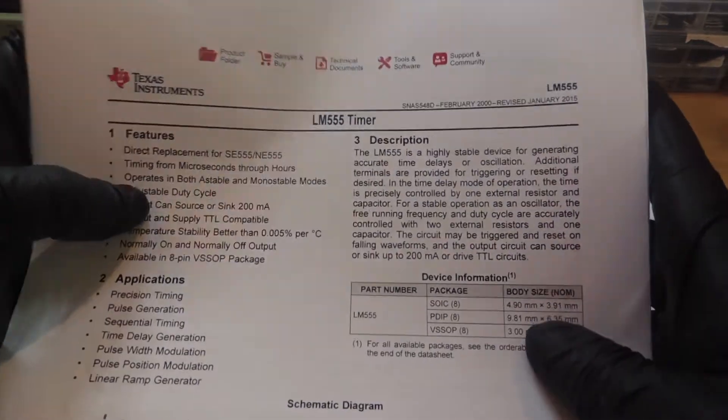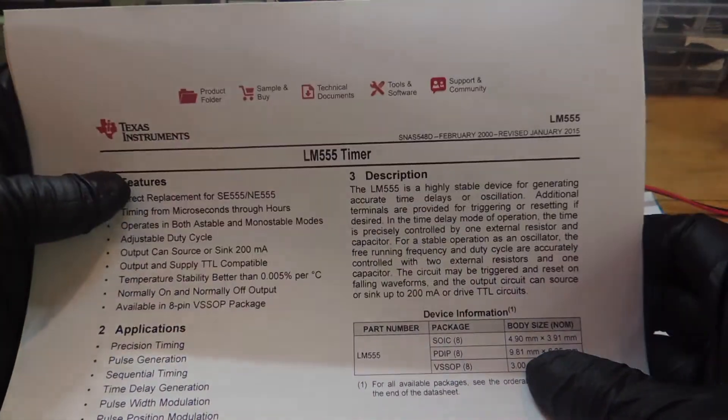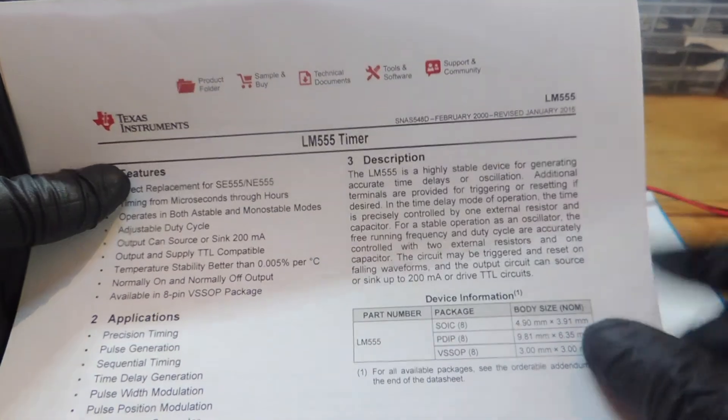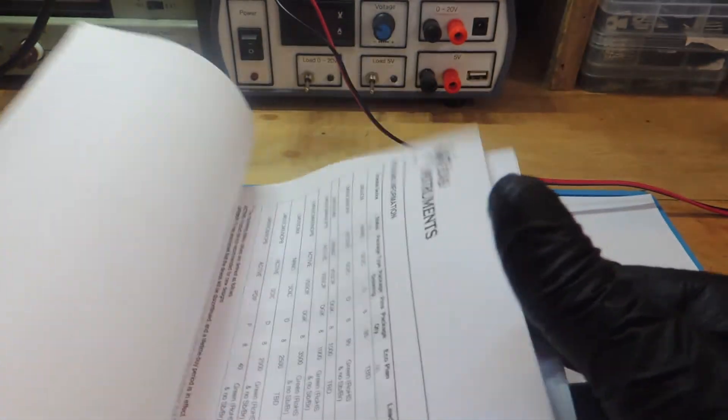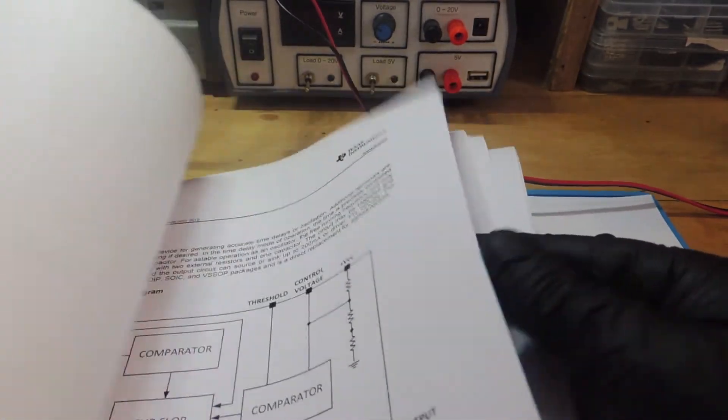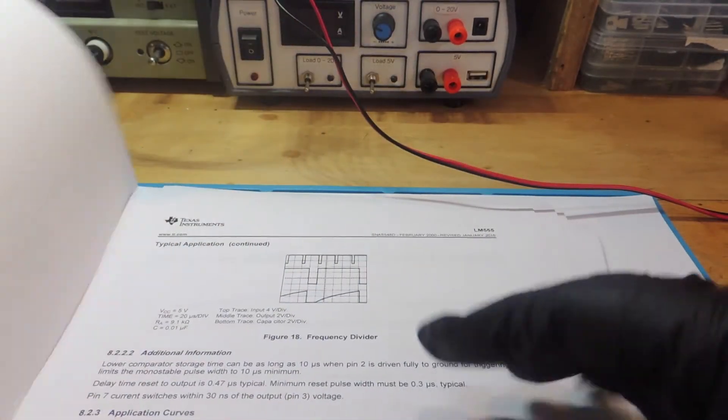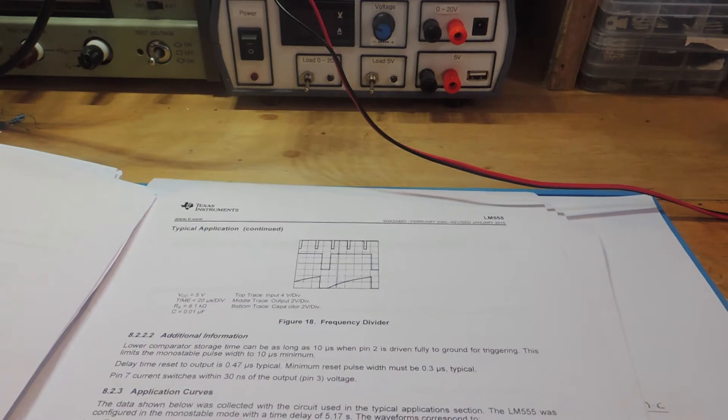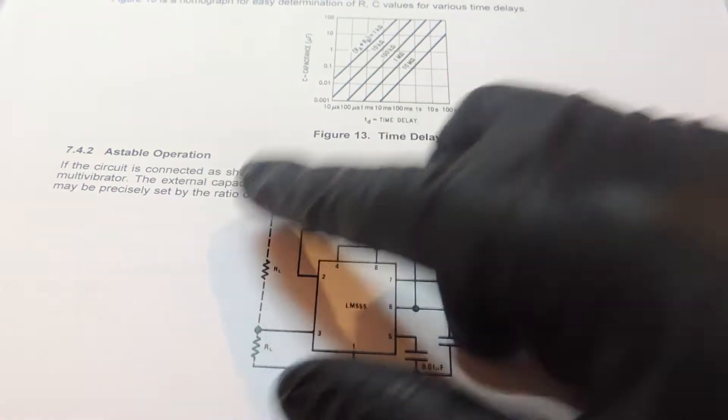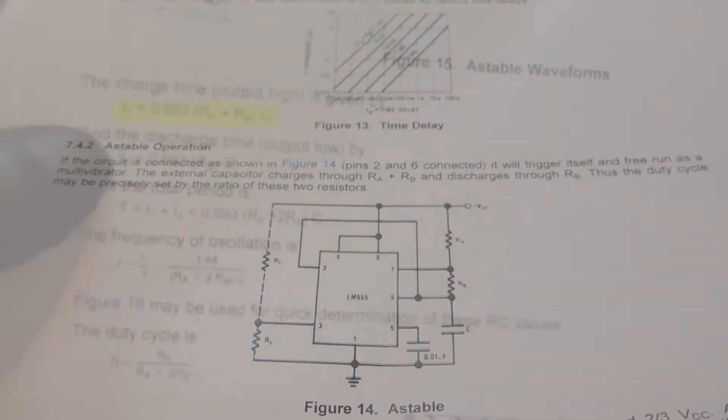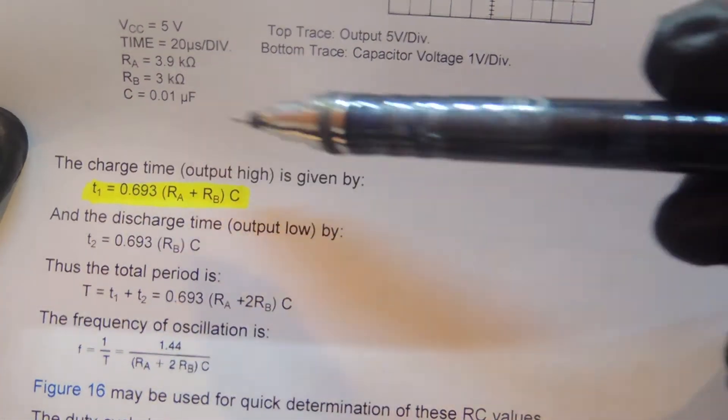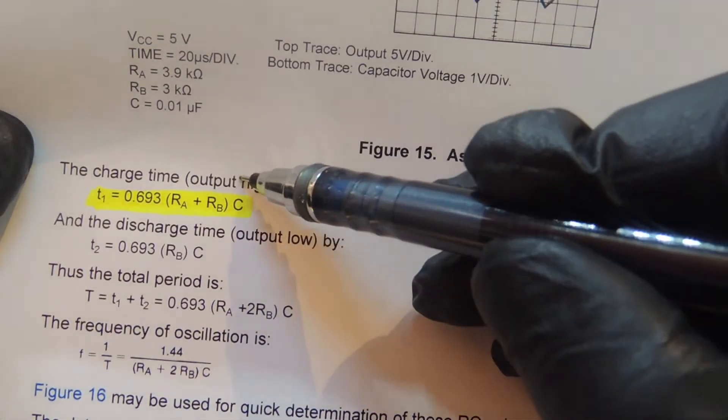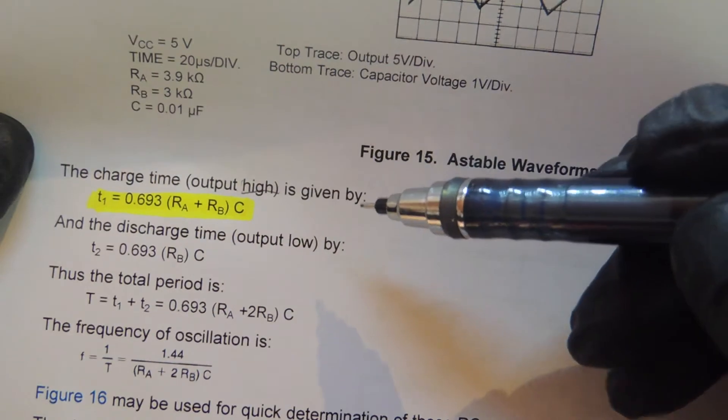The secret is always in the datasheet of the components. Here we have the 555 timer datasheet. If you guys look here inside, you guys will find all the answers we need to make our own servo tester. First, you guys should look for the astable operation of the 555 timer. After that, you guys should find the formula for the charging time of the capacitor, what gives us the high output we need to drive our servos.